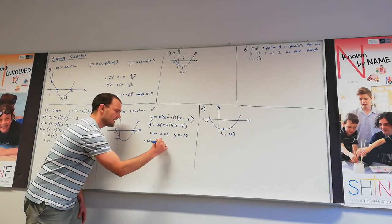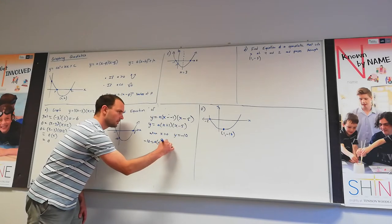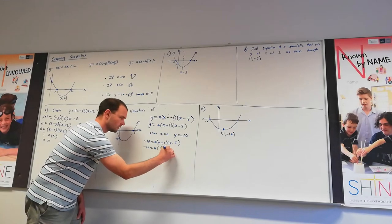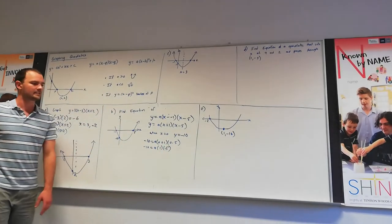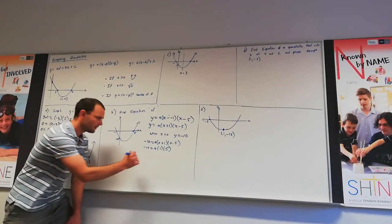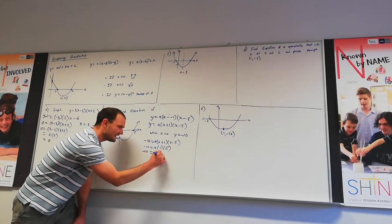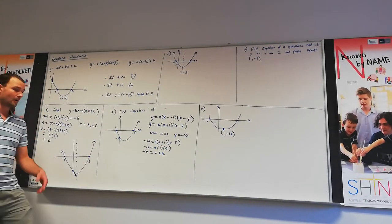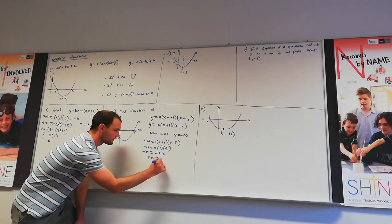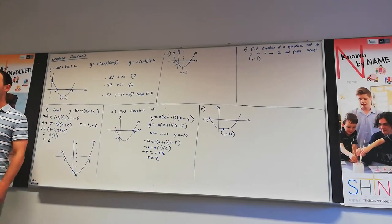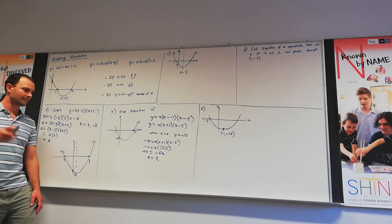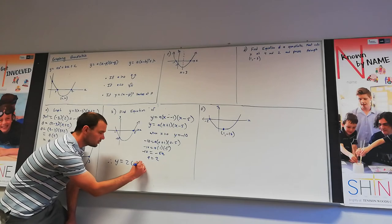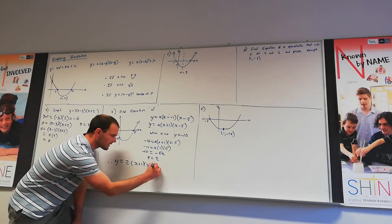Substituting: −10 = a(0 + 1)(0 − 5), which gives −10 = a(1)(−5), so −10 = −5a. Dividing both sides by −5 gives a = positive 2. We don't stop there — we need to state the full equation. Therefore y = 2(x + 1)(x − 5).